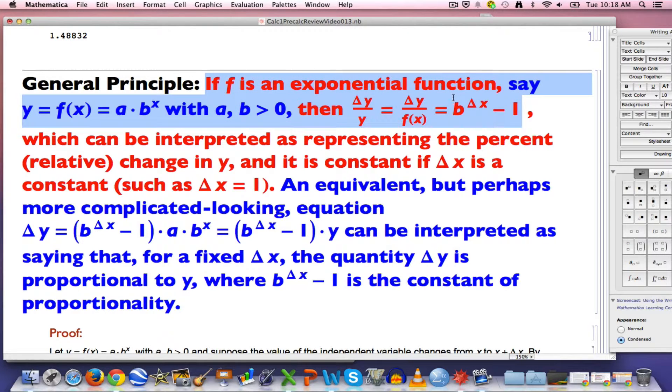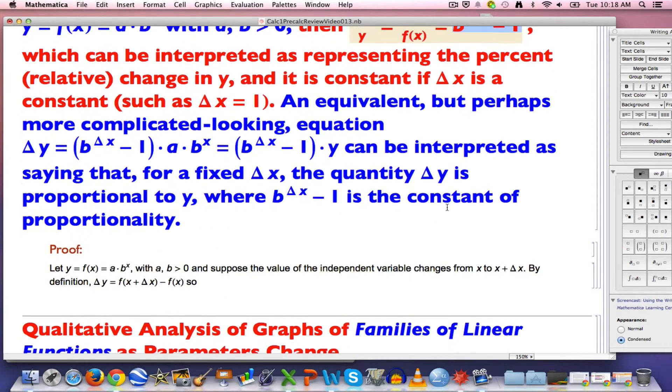It's kind of a long statement. Suppose F is an exponential function. Say, F of X equals A times B to the X, where A and B are positive. Technically, I'm even allowing B to be 1, though that's usually not thought of when you're thinking about exponential functions. The relative rate of change of Y, delta Y over Y, ultimately equals B to the delta X power minus 1. This is a very special fact about exponential functions. It doesn't work for other kinds of functions.